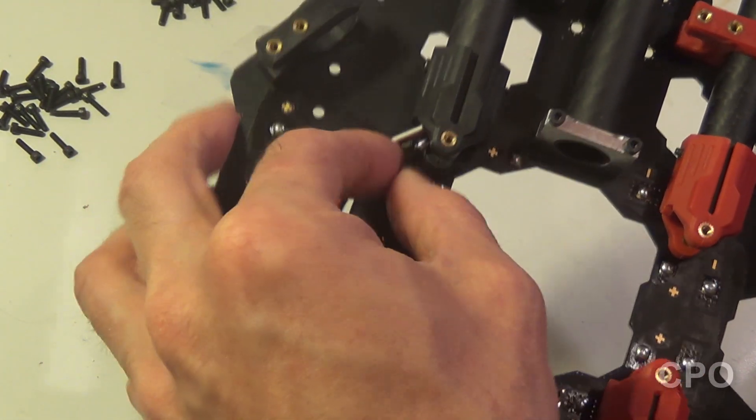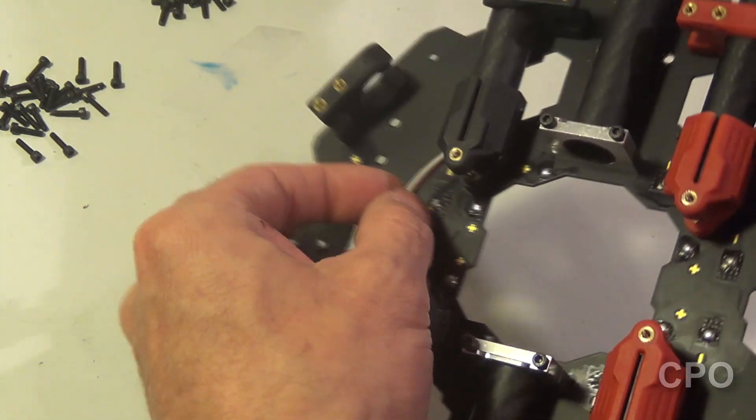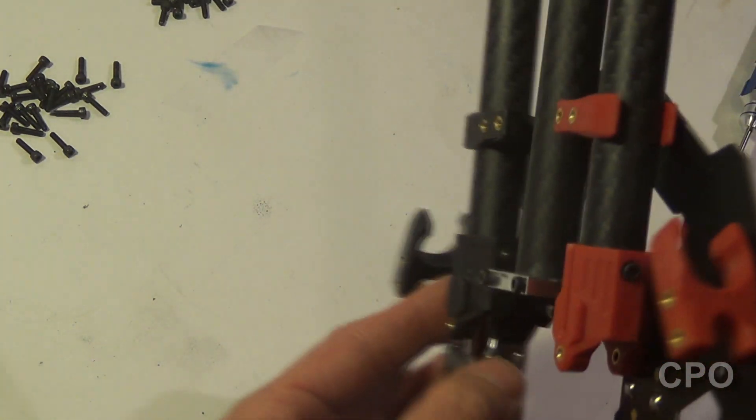I originally started trying to use a string to pull them through, and it just got more complicated. It was just easier eventually, I found, to just snake them through like this.